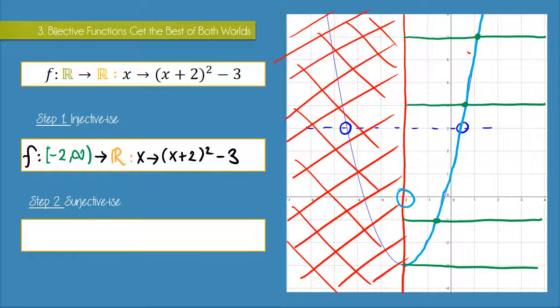Next, let's make this function surjective. And for the function to be surjective, its range has to equal the codomain. And as you can see, the range is definitely not equal to the set of all real numbers, because the minimum point of this graph is where y is minus three. So we can't get values smaller than minus three.